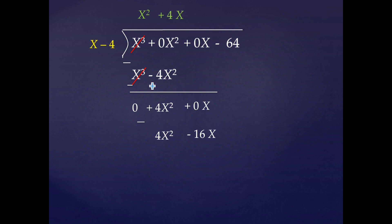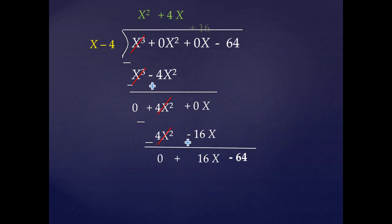Again we subtract the second algebraic expression from the first. While subtracting, we change the signs: +4x² becomes -4x² and -16x becomes +16x. So +4x² and -4x² cancel, and 0x + 16x gives 16x. We then bring down the next term -64 from the dividend. Since x × 16 = 16x, in the quotient we write +16.